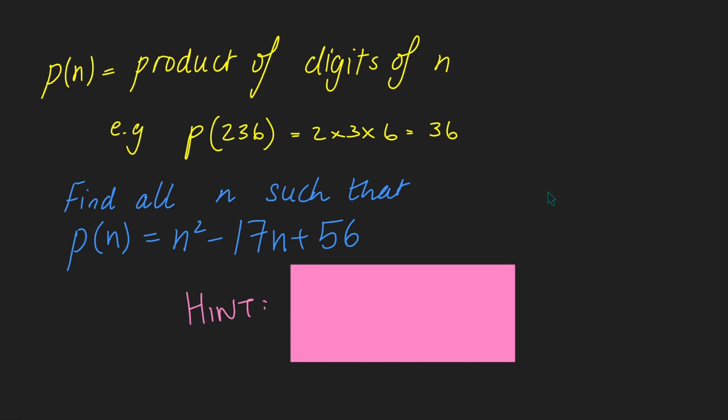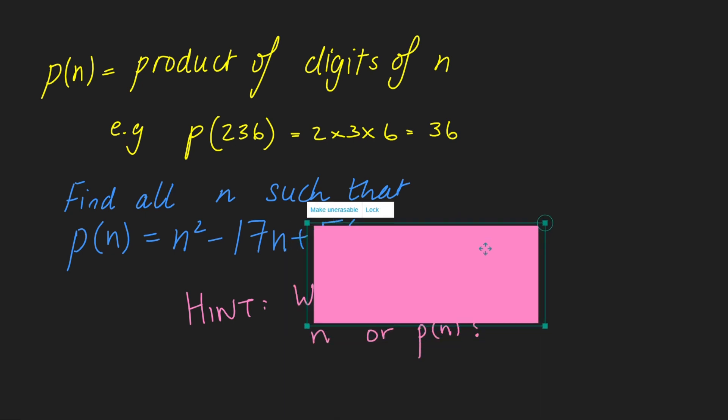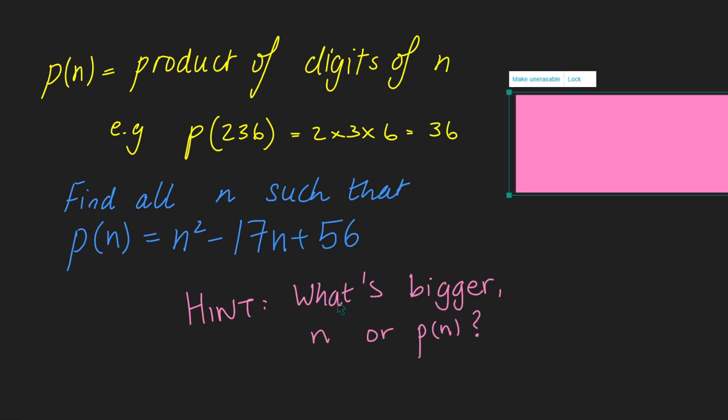We want to find all n such that p of n equals n squared minus 17n plus 56. And I've got a little hint here which I've covered. So if you want to have a go at this problem without the hint, pause the video now and give it a go for yourself. Otherwise, I'm going to release the hint. The hint is to consider what's bigger, n or p of n. If you want to have a go at this problem, pause the video now and give it a go for yourself. I'm going to dive straight into a solution.